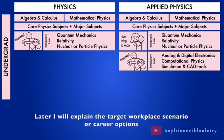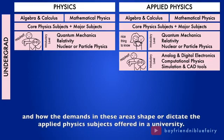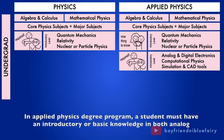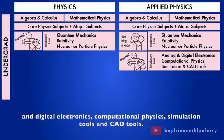Let's now turn to some essential applied physics subjects. Later, I will explain the target workplace scenario or career options and how the demands in these areas shape or dictate the applied physics subjects offered in a university. In applied physics degree program, a student must have an introductory or basic knowledge in both analog and digital electronics, computational physics, simulation tools, and computer-aided design tools or CAD tools.